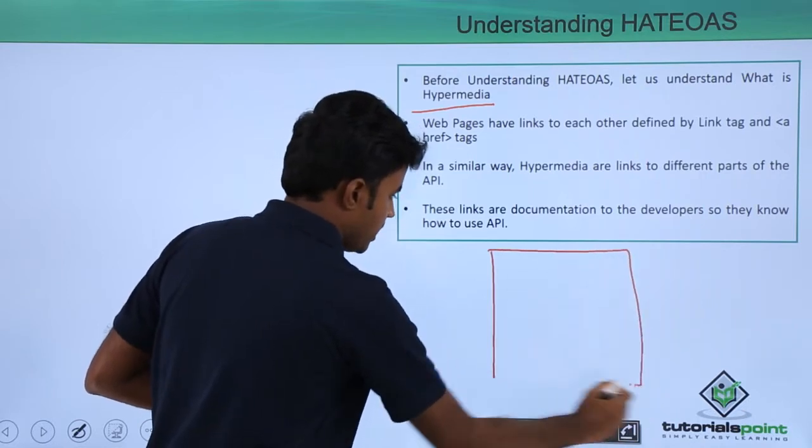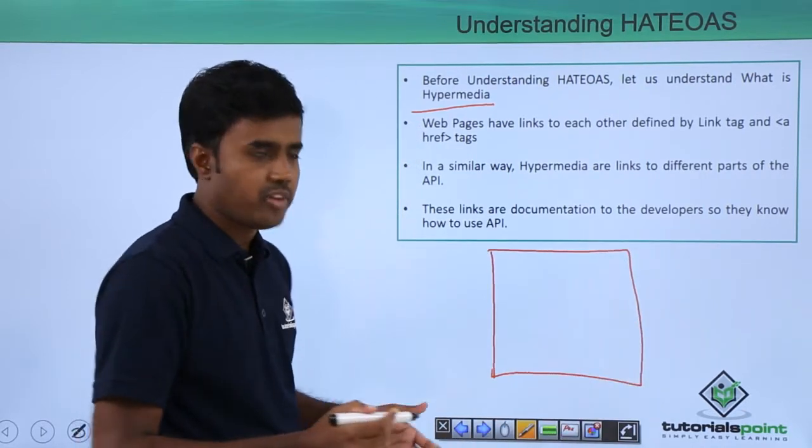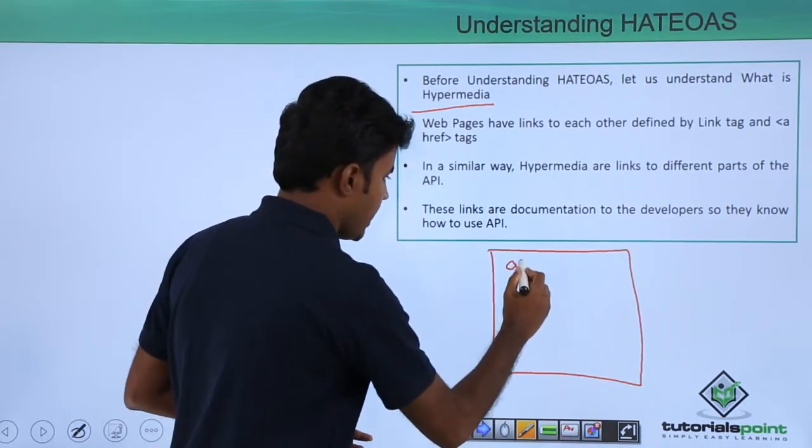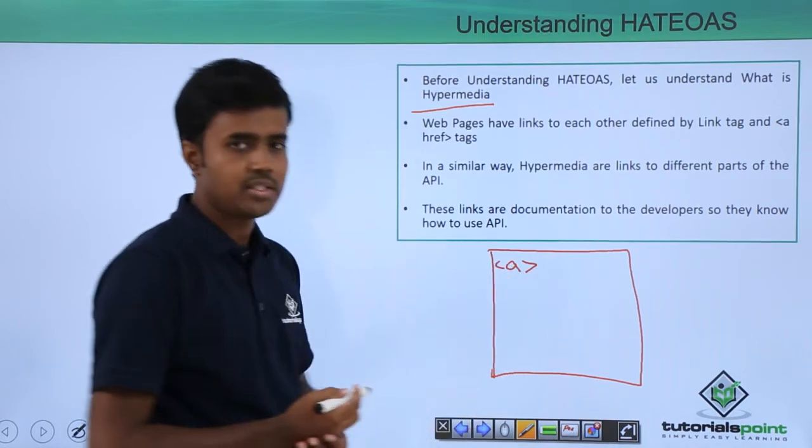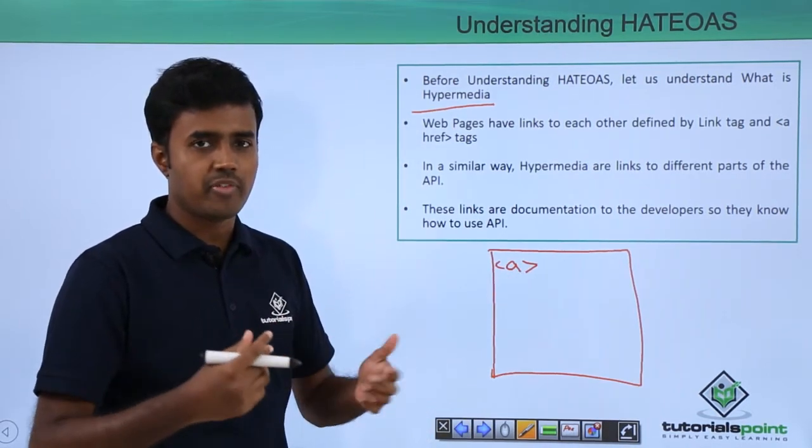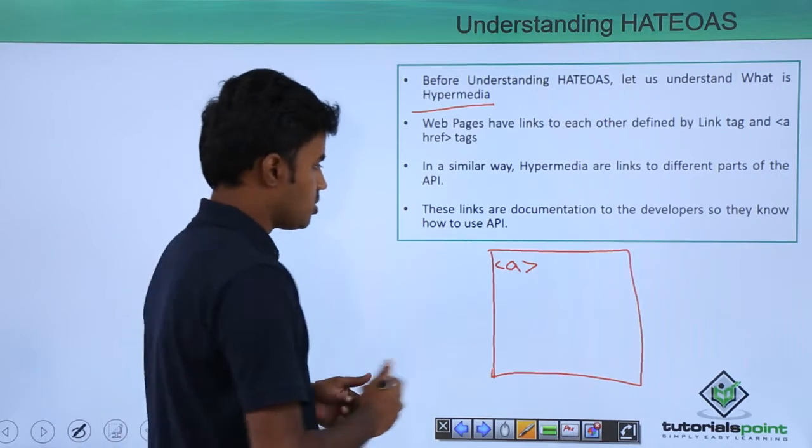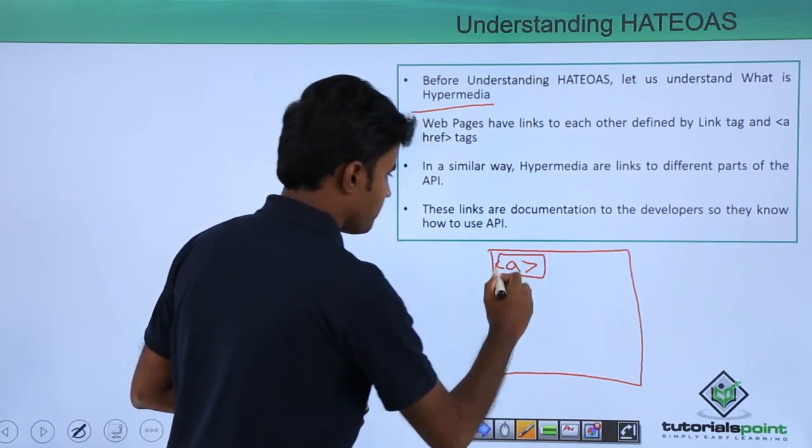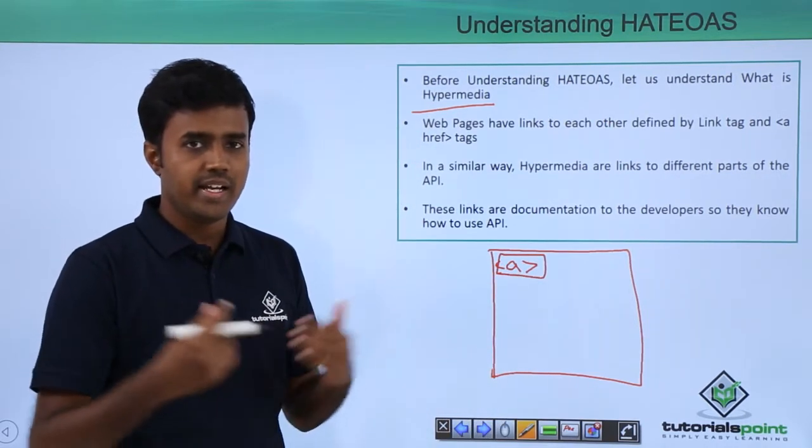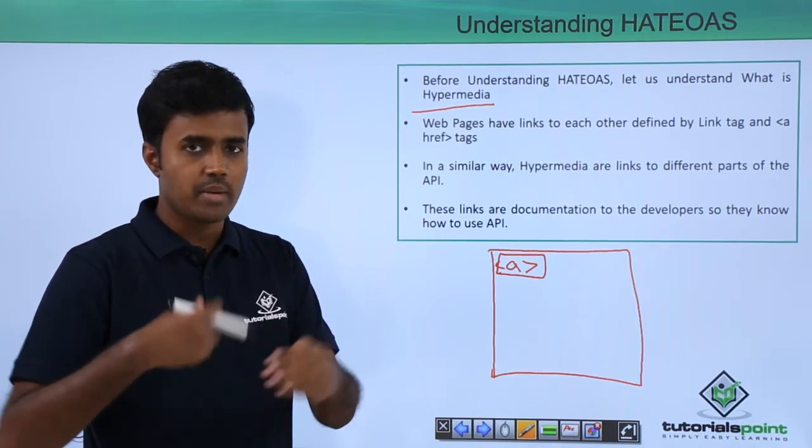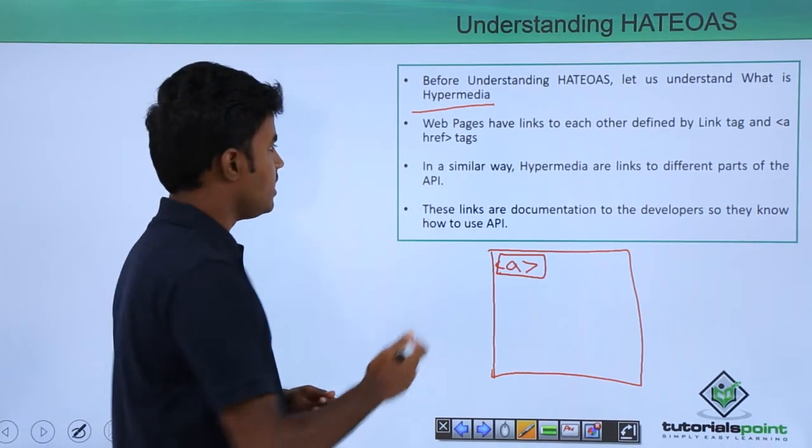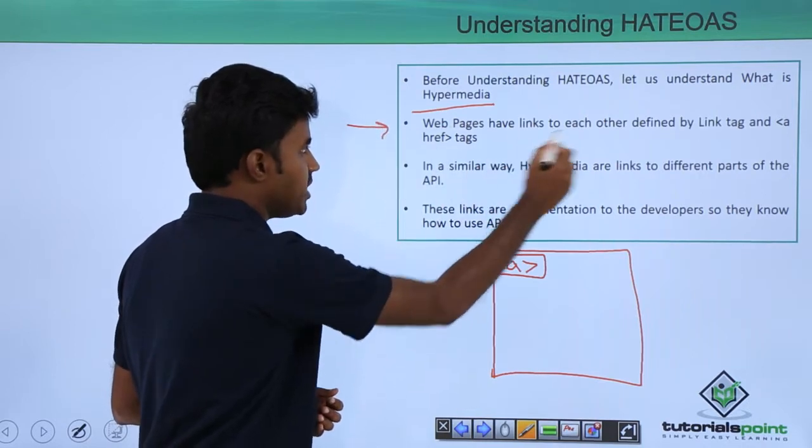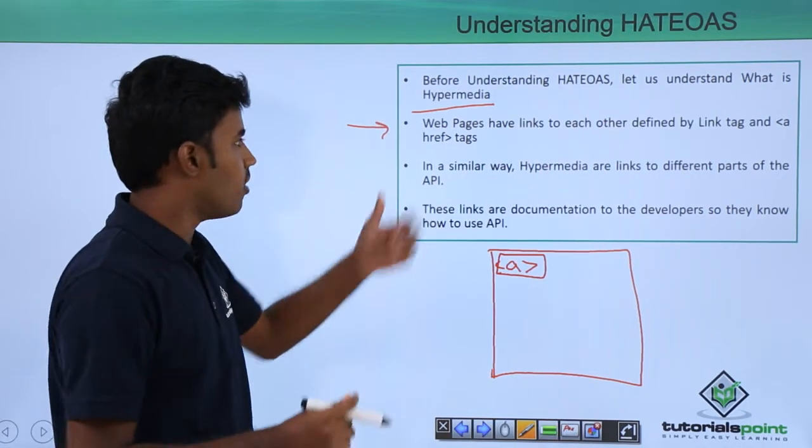For example, you go to your favorite website and there are different A tags, which are links that link to different documents. These links link different documents together, making a website for you.